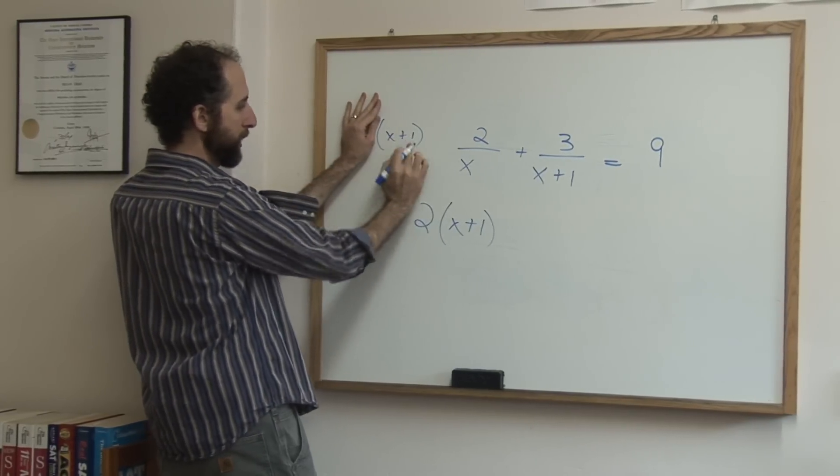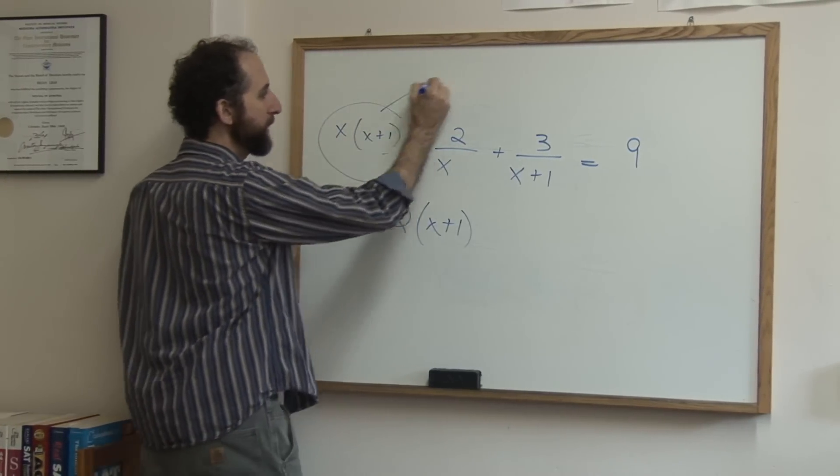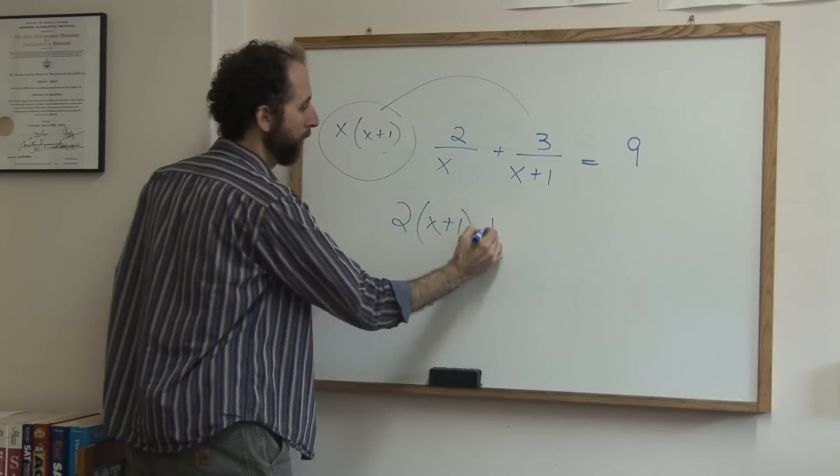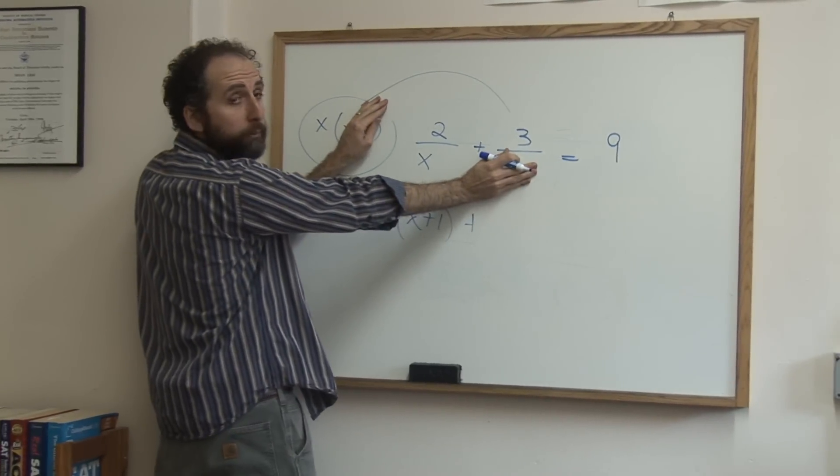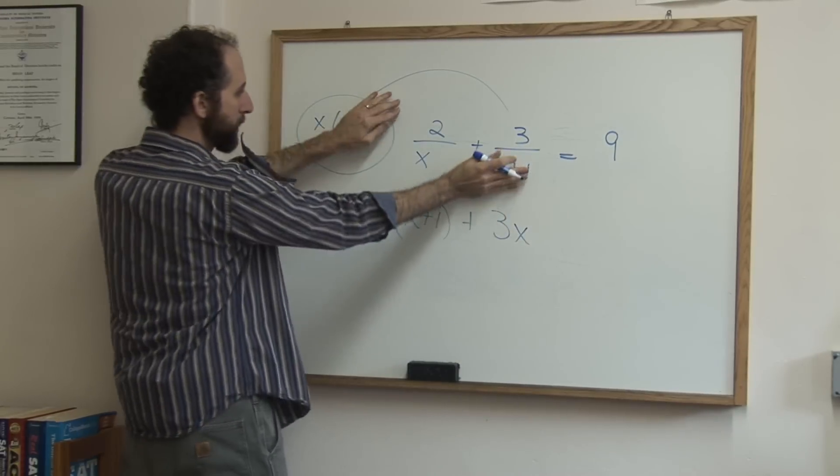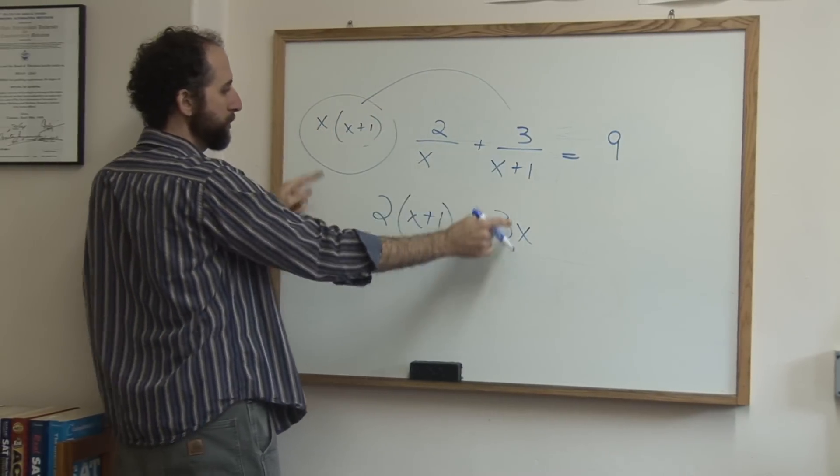And when I multiply this by the second part, the x plus 1's will cancel out, leaving me just 3 and x. x times 3 is 3x.